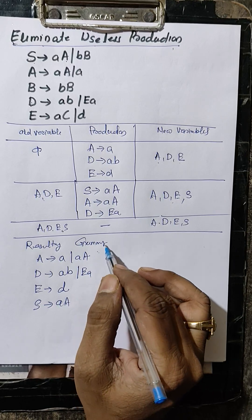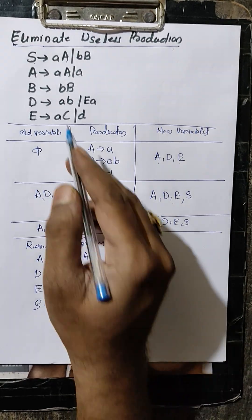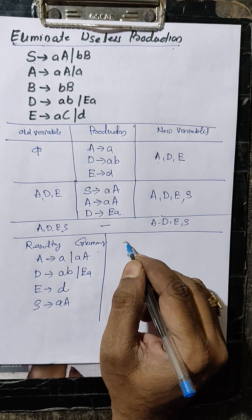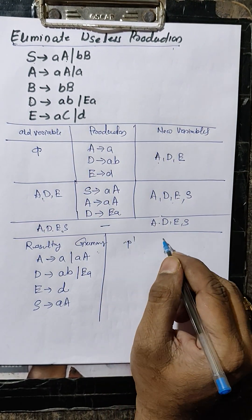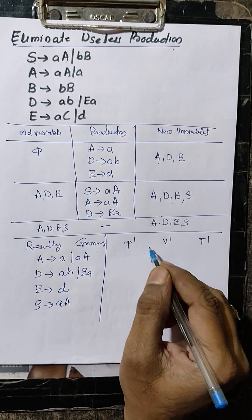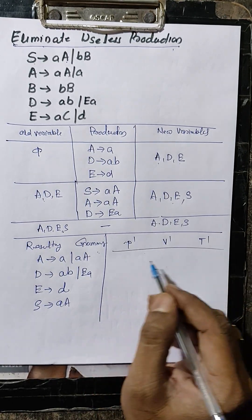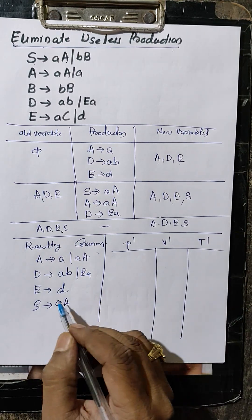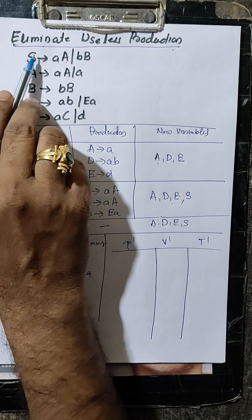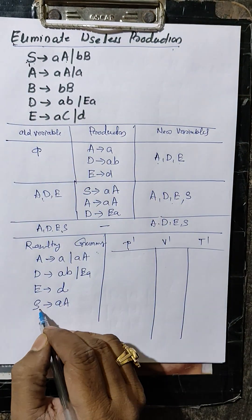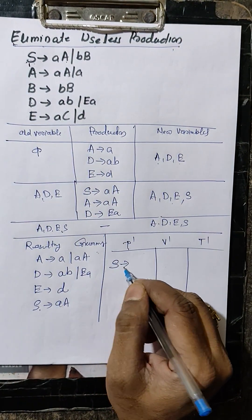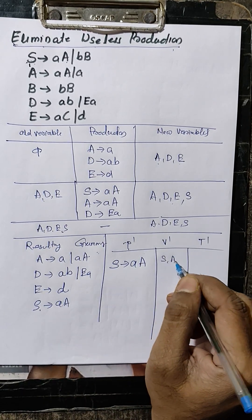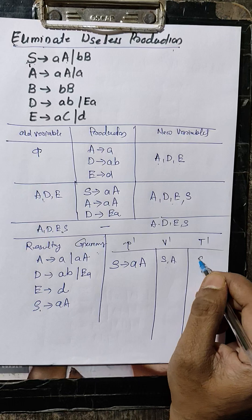From the given grammar, which is the starting symbol, you have to find P dash, V dash, T dash. Within this, find productions from the starting symbol. Within the given productions, starting symbol is S — S produces AA. Variables are S and A, and terminals only A.